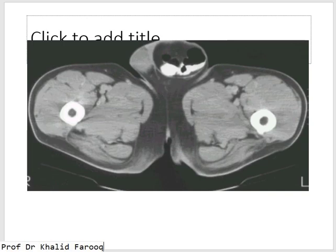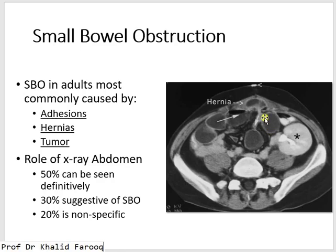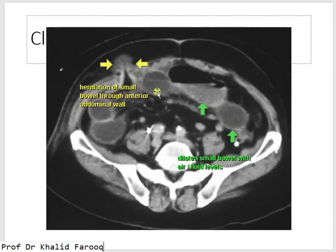These images show hernia through the inguinal scrotal region leading to intestinal obstruction. Another case shows hernia through the anterior abdominal wall — usually these are surgical hernias where, after a surgical procedure, the anterior abdominal wall becomes weak and gut loops can herniate through the weak portion. Another example shows hernia through a scar site in the anterior abdominal wall. The left kidney is a transplanted kidney; because of previous intervention there was a weak point, and herniated gut loops can be seen. Another example shows herniated small bowel through a scar site in the right lower anterior abdominal wall, with dilated gut loops proximal to this.